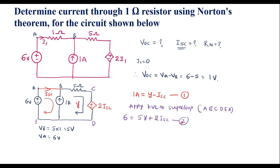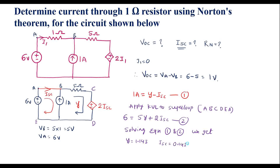Solving equations 1 and 2, we get Y = 1.143 and ISC = 0.143 amps. So we have found ISC = 0.143 amps. We now have both VOC and ISC.